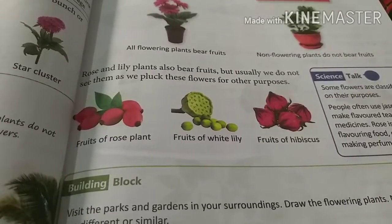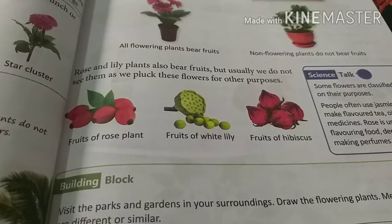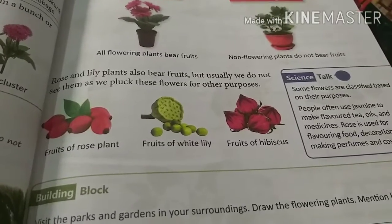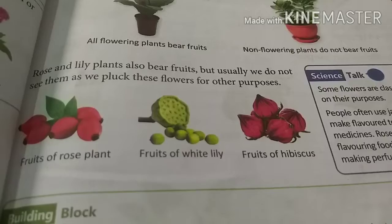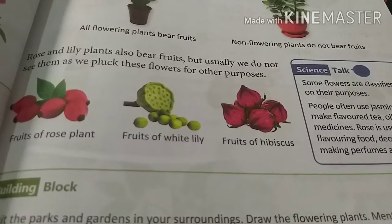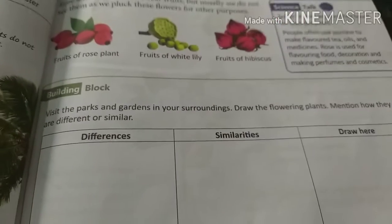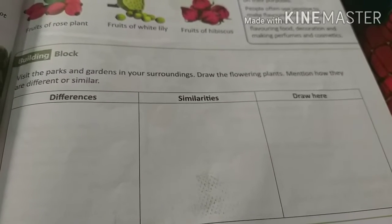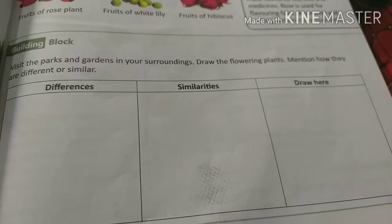Have you ever seen the fruit of a rose plant? If you have a rose at home, you can observe it. You can also see the fruit of white lily and hibiscus. Now, visit the parks and gardens in your surroundings, draw the flowering plants, and mention how they are different or similar. If you have visited any park or garden, you would have seen many flowers there.